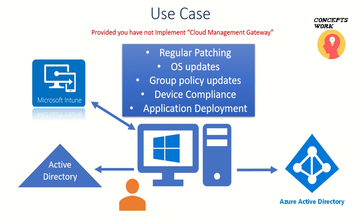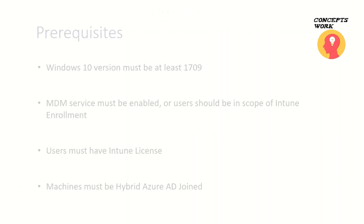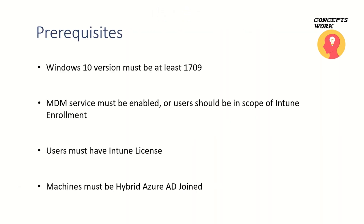This is a typical use case, so you can now relate whether you need this feature or not and what should be the scale of your evaluation. There are certain prerequisites to keep in mind. All Windows 10 machines you are scoping must be at least version 1709 or above. Users must have an Intune license, and users should be properly scoped from Intune as well.